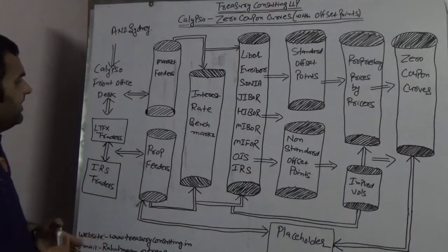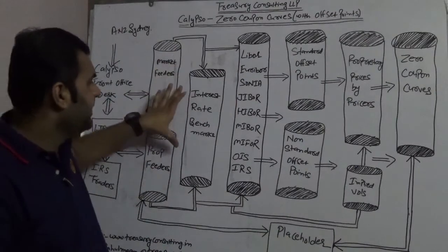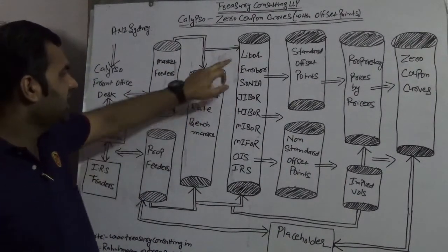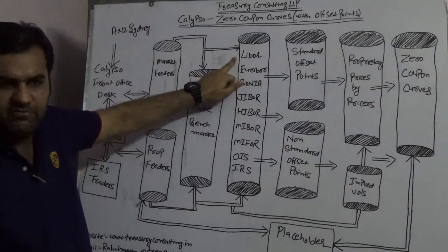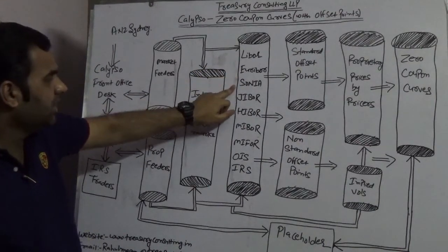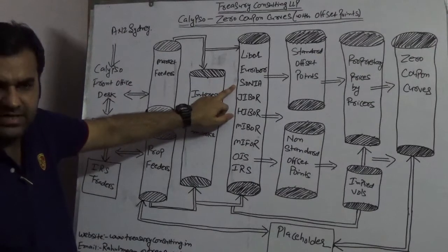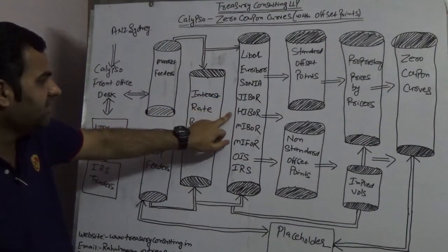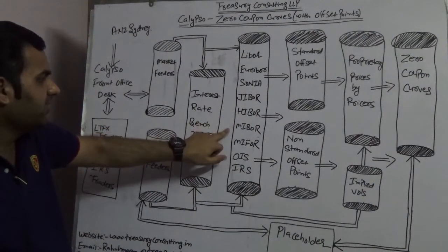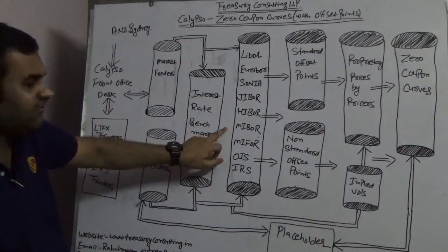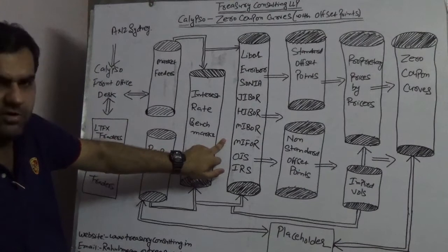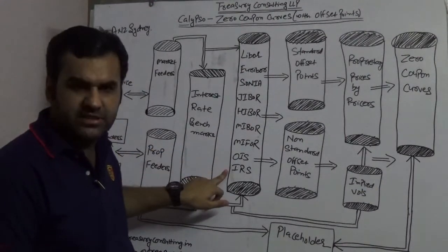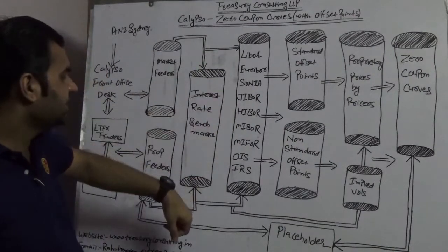These proprietary feeders link with interest rate benchmarks. These interest rate benchmarks are LIBOR (London Interbank Offered Rate), EURIBOR, SONIA (Sterling Overnight Index Average, which is for GBP), JIBOR (Japanese Interbank Offered Rate), HIBOR (Hong Kong Interbank Offered Rate), MIBOR (Mumbai Interbank Offered Rate), MIFOR (Mumbai Interbank Forward Offered Rate), OIS Curves (Overnight Index Swap Curves), and IRS Curves.